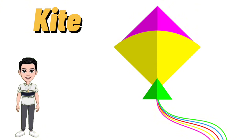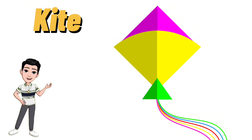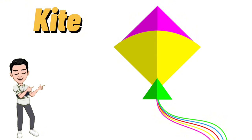Yes, K for kite. A kite is a lightweight flying object tethered to a string. Kites are typically made of paper, plastic, or fabric stretched over a frame, and are flown for recreation or as part of celebrations.